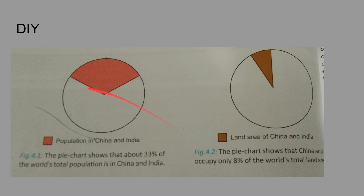Now think about this: China and India together have a population of around 33 percent of the world's population, but only 8 percent of the world's total land. Consider how this is a problem when you look at the number of people versus the land available.